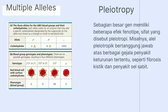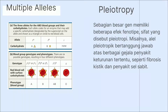Selanjutnya ada pleiotropi. Sebagian besar gen memiliki beberapa efek fenotip, sifat yang disebut pleiotropi. Misalnya, alel pleiotropi bertanggung jawab atas berbagai gejala penyakit keturunan tertentu seperti fibrosis kistik dan penyakit sel sabit.